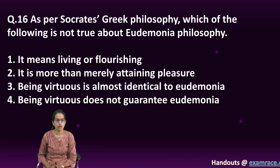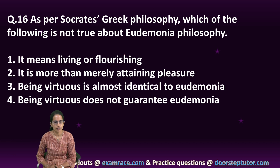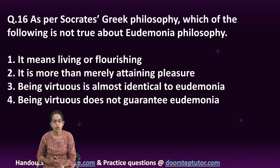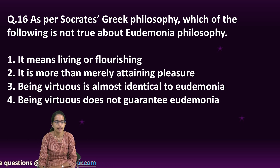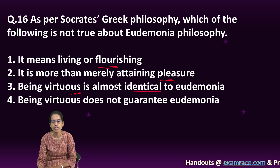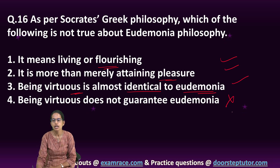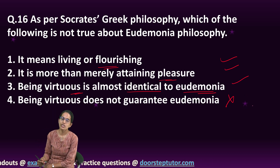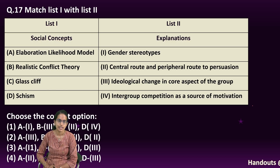Socrates and Greek philosophy: which of the following is not true about eudaimonia? According to eudaimonia, being virtuous is important; it stands for a happy and flourishing lifestyle — more than just attaining pleasure. Being virtuous is almost identical to eudaimonia. Options one, two, and three are correct; option four is incorrect. It focuses on a happy state, being in good spirit, being virtuous, and focusing on one's own character strengths.